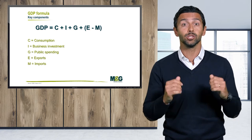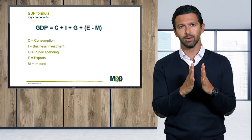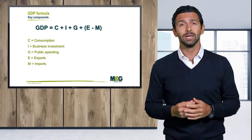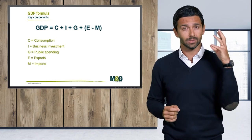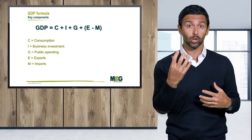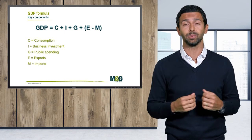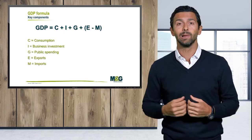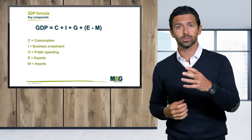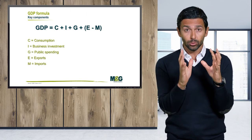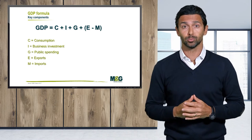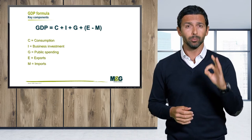You can see in this slide the formula behind GDP. GDP is the sum of a number of items: we have consumption, we have business investments from the private sector and corporates, we have public spending, and then we have the sum of exports minus imports. The overall GDP growth trend is important to observe.